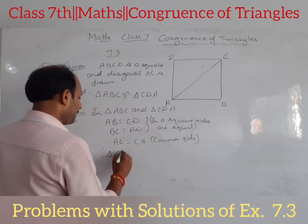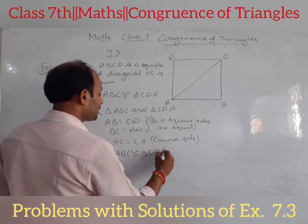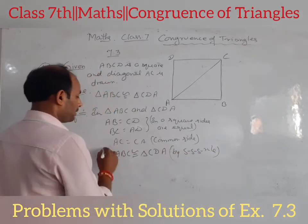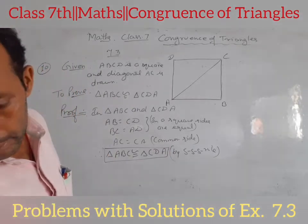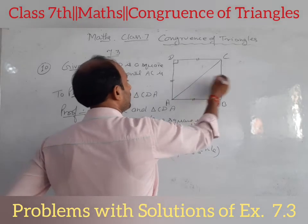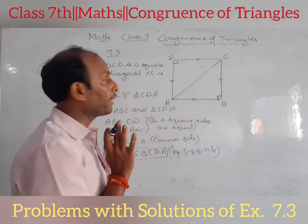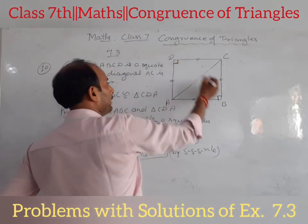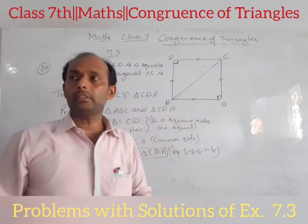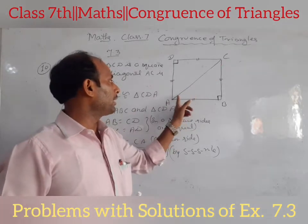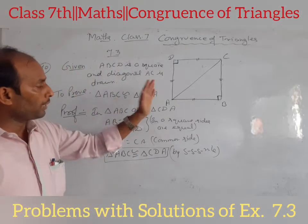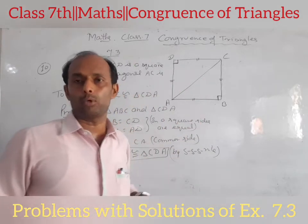Therefore, triangle ABC is congruent to triangle CDA by the Side-Side-Side rule. For Side-Angle-Side: this side is equal, this angle is equal, and this side is equal — so SAS applies. For RHS: this angle is a right angle, 90 degrees, this side is common (the hypotenuse), and if any other side is equal then RHS is true. For Angle-Side-Angle: this angle is equal, this side is equal, and this angle is equal. You have to use any one condition to prove that both triangles are congruent.